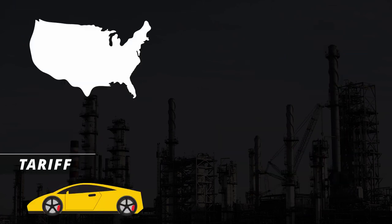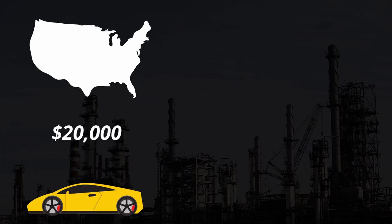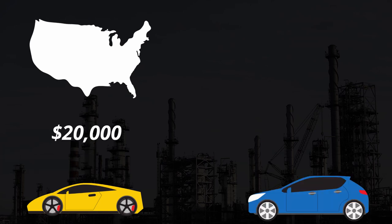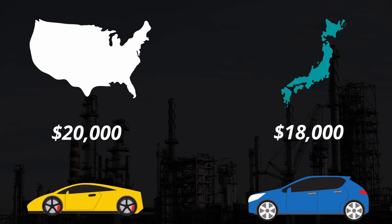However, this trade can sometimes be discouraged by the government through tariffs. Imagine a Lamborghini Huracan produced by the United States costed $20,000, and a Subaru STI produced in Japan costed $18,000. As a reasonable consumer, I am more likely to buy the Japanese car because it is cheaper. To incentivize the purchase of an American car, Uncle Sam will slap a tariff of $4,000 on top of the $18,000, which makes it $22,000.